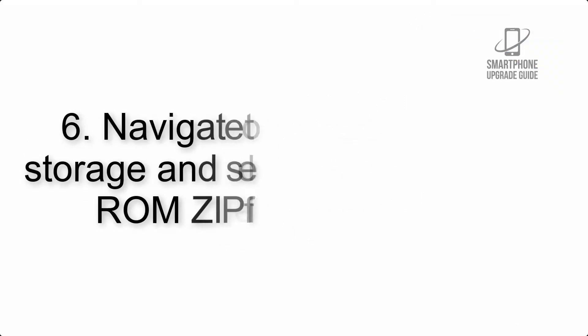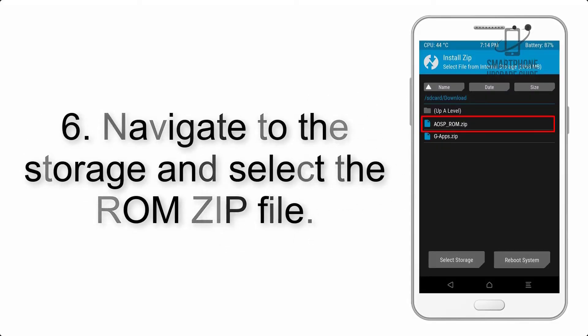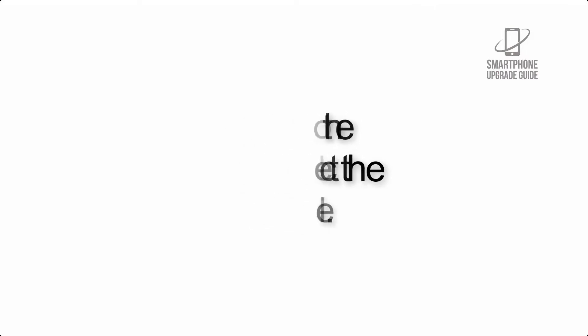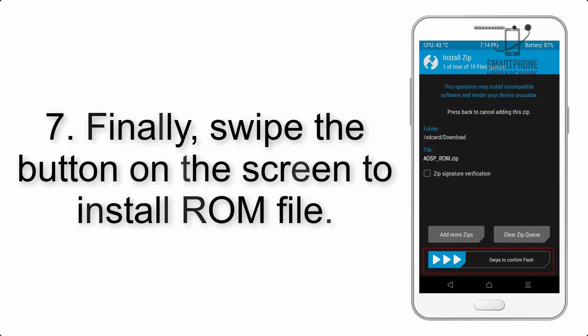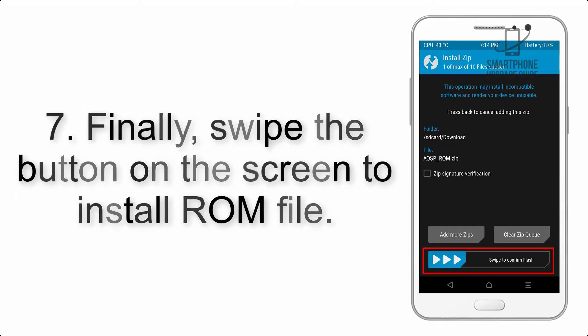Step 6: Navigate to the storage and select the ROM zip file. Step 7: Finally, swipe the button on the screen to install the ROM file.